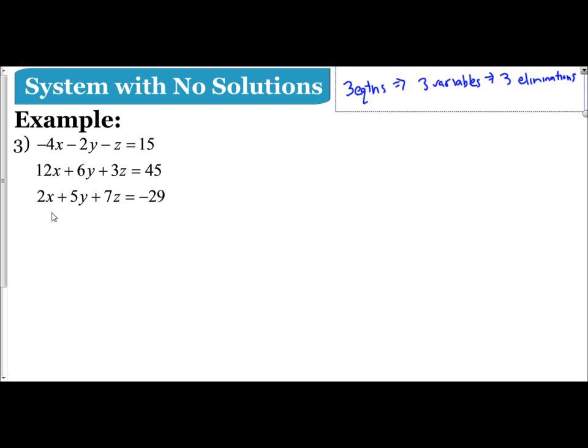When we look at this, we want to decide which variable to eliminate. Do I want to eliminate x? How am I going to pair them together? I see 2 and 12, I see 2 and -4. So I could pair the first and third equations together since 4 is a multiple of 2, and I can pair the first and second equations together since 12 is a multiple of 4.